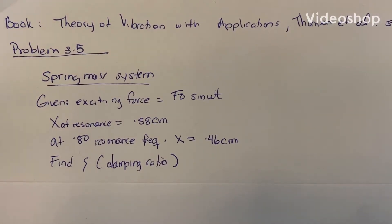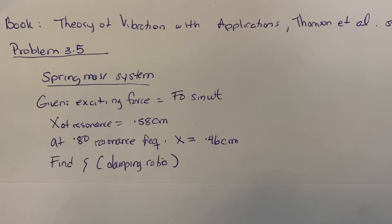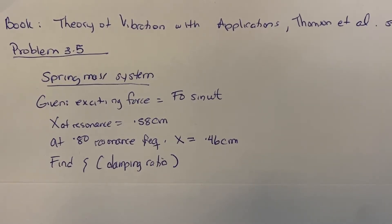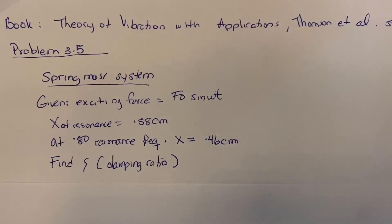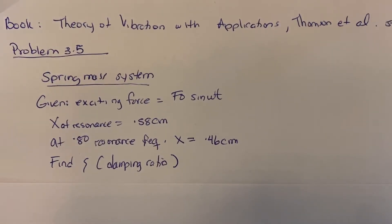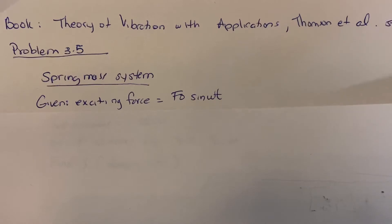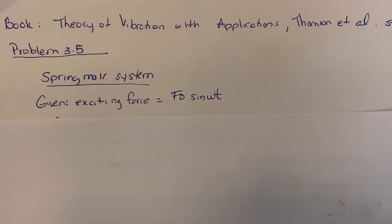This problem is about a spring-mass system with an exciting force of F0 sine Wt. The problem also tells us that the amplitude at resonance is 0.58 centimeters, and at 0.8 resonance frequency the amplitude is 0.46 centimeters. We are asked to find the damping ratio. Let's first write down the equation to find the amplitude of a system vibrating with a force applied to it.